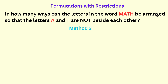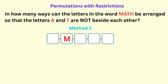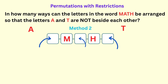The second method is to write down the other letters in the word MATH — that's M and H — and leave a space between them. We know that A and T cannot be beside each other. However, they can go into any of the blank spaces, which will ensure that they are never beside each other in any of the permutations.